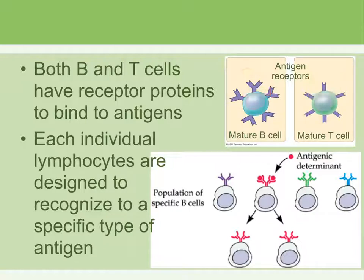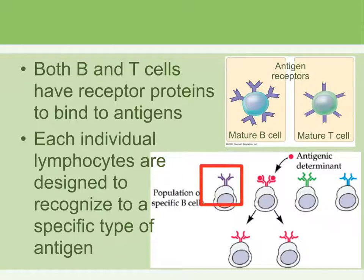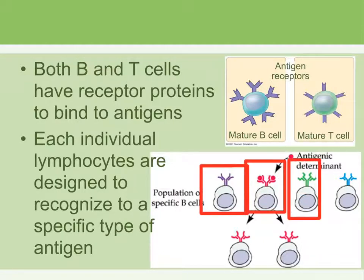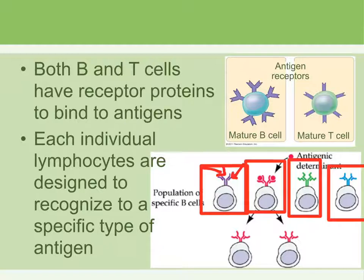Each B cell that is created has different receptors on its surface, and each receptor is very specific to the type of antigen it can bind to. There are different types of B cells shown here — four different forms — and they all differ in the antigen-specific binding site.